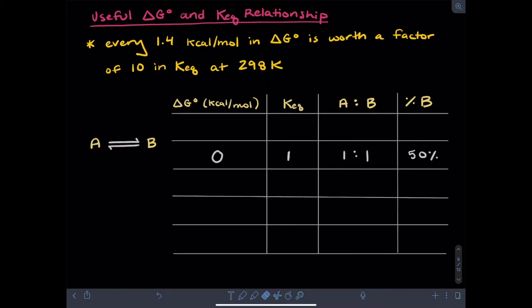Let's consider our reactant and product A and B here, and assume that they're at equilibrium. First let's consider a thermoneutral reaction with delta G equal to zero. If this is the case, KEQ will equal one, so both reactants and products are equally favored. Our ratio of A to B is one to one, and you can think about your percent of B as being 50%. Now let's consider what if our reaction instead had a delta G of plus 1.4. If delta G is positive 1.4, this means KEQ is an order of magnitude smaller, making it 0.1 instead of 1. This will mean you'll have 10 times as much A as B, meaning the percentage of B would be 9% instead. So we have a pretty dramatic change just going from 0 to 1.4 kilocalories per mole.